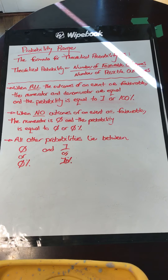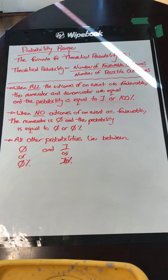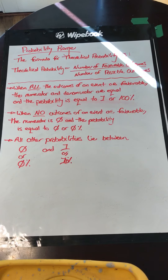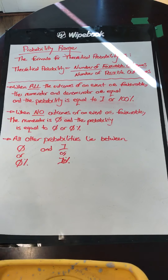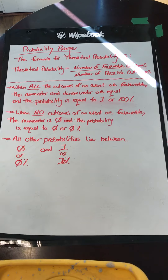Theoretical probability is the number of favorable outcomes divided by the number of possible outcomes. When we are using theoretical probability, we are thinking that this is happening in a perfect world. So when all the outcomes of an event are favorable, the numerator and denominator are equal and the probability is equal to 1 or 100%. When no outcomes of an event are favorable, the numerator is 0 and the probability is equal to 0 or 0%. And all other probabilities lie between 0 and 1, or 0% and 100%.